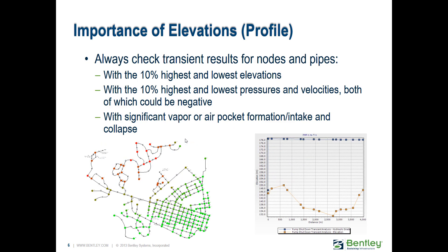Here's an example of the importance of elevation. To check your results, you can use flex tables, sort them by elevation, and check your highest and lowest points. You can open up a junction table, sort on elevation, and focus on those particular elements. A profile in the transient results viewer may only cover one path, so there might be significant high or low points elsewhere in the system that you're not covering in that profile path.